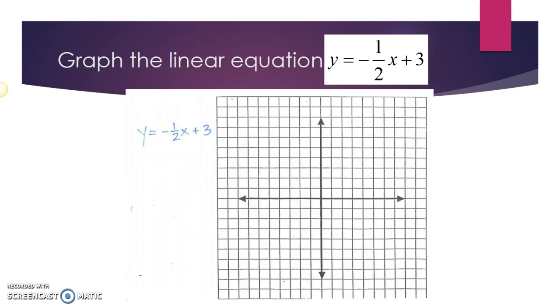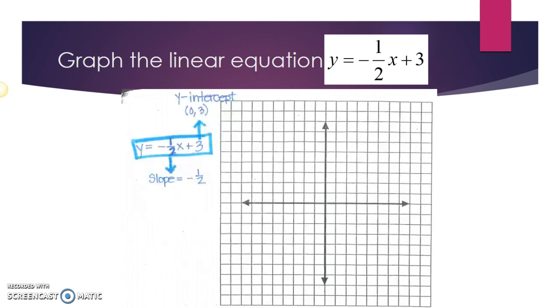Let's suppose we want to graph the linear equation y equals negative one-half x plus three. The first thing we want to do is identify the slope and the y-intercept.